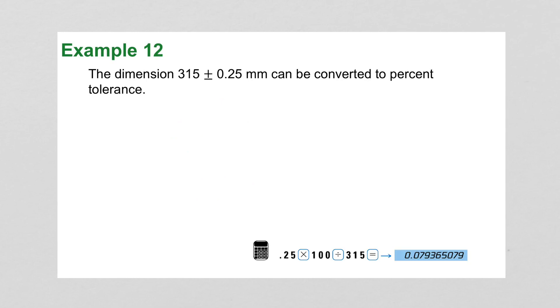Example 12 says the dimension 315 plus or minus 25 hundredths of a millimeter can be converted to percent tolerance also. So we would say again the tolerance 0.25 over the measurement 315 would be equal to the rate over 100. And we get 0.08 percent. So this only has a tolerance of 0.08 of a percent.